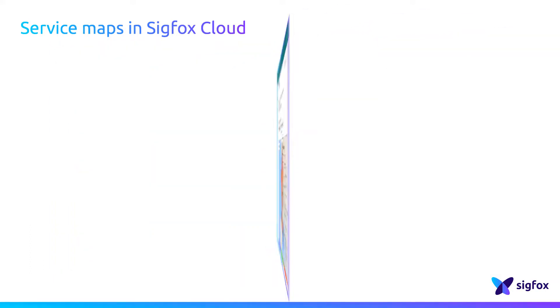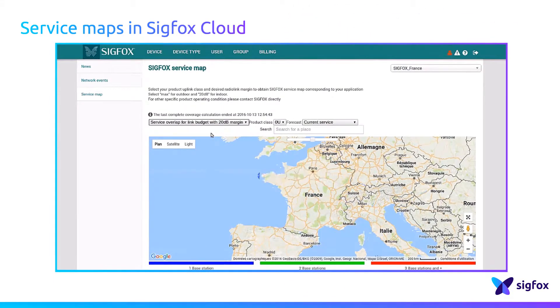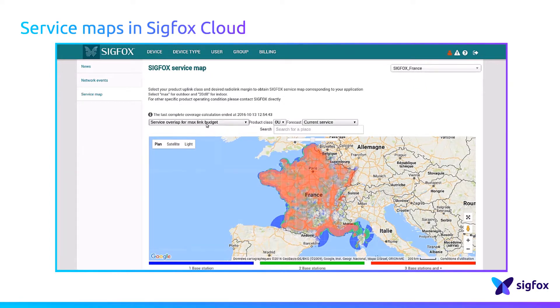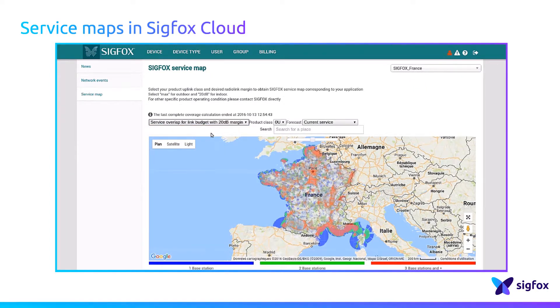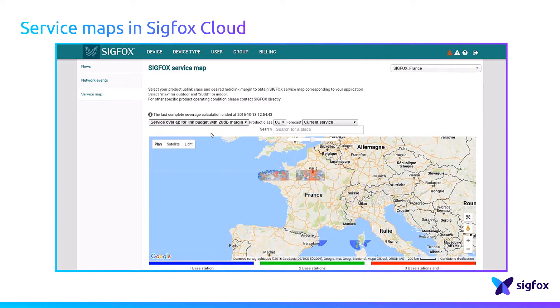For indoor applications, experience shows that the margin ranges from 20 to 30 dB. So to simulate an indoor environment, a 20 dB margin can be applied.